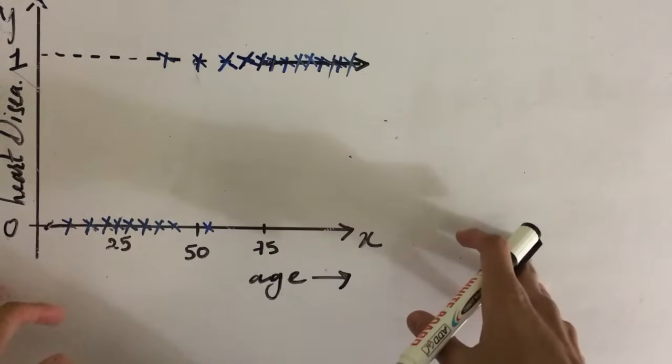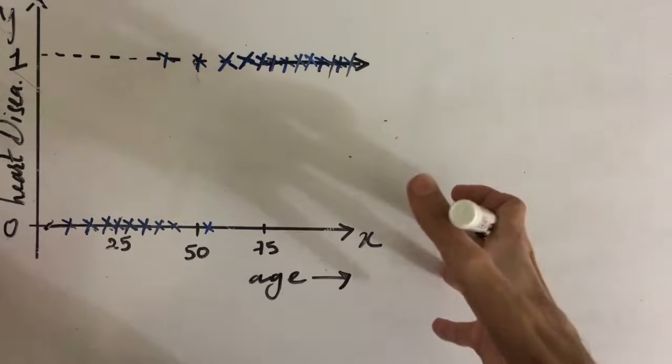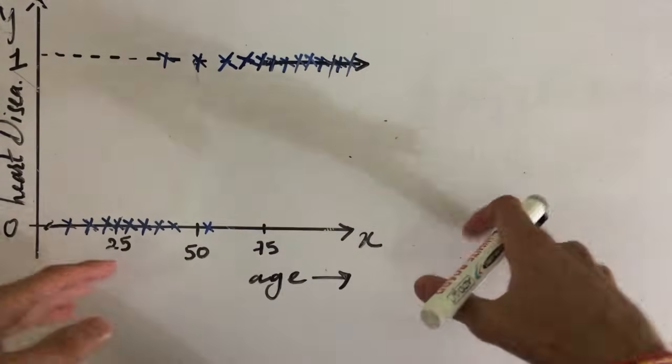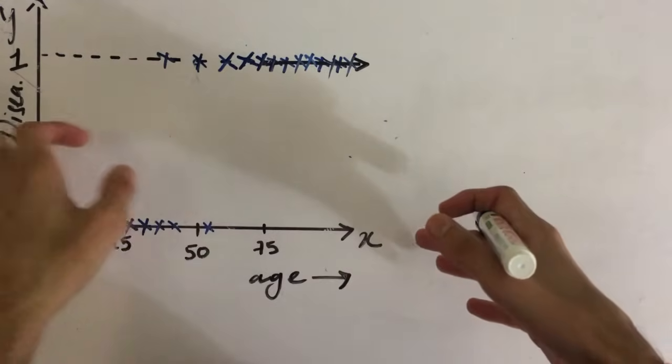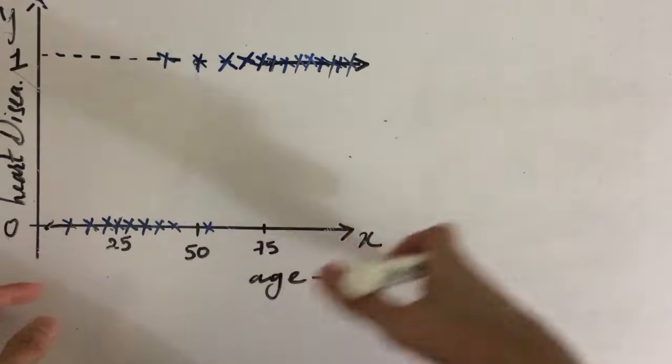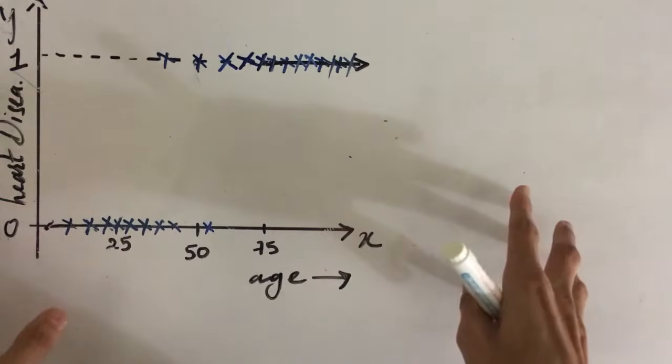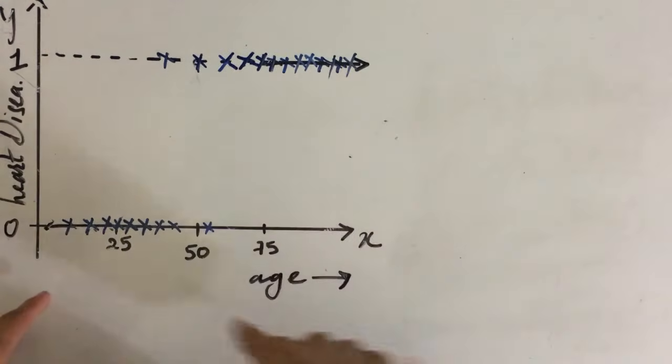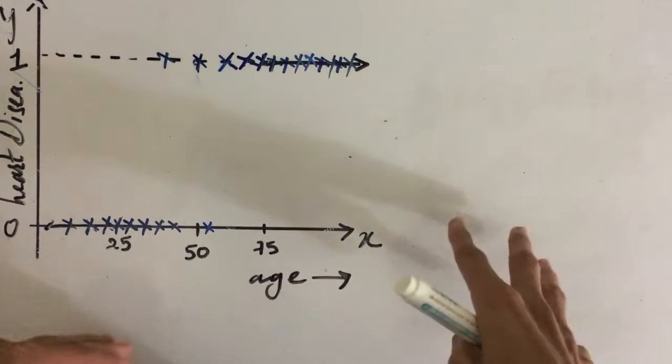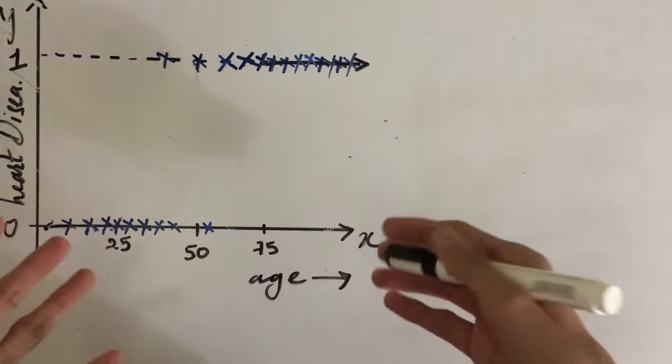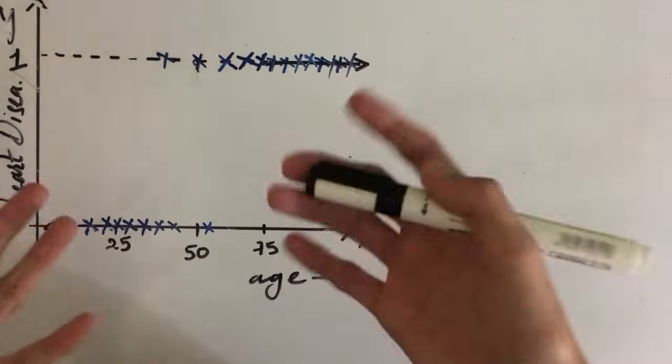Now this can be very well understood with the help of this example. Let's say our goal is to predict if the person is having a heart disease or not based on our input feature which is age. For simplicity, I have taken a very simple dataset where we are only considering only one input feature, that is the age of the person. So now how can we make new predictions based on this given dataset?